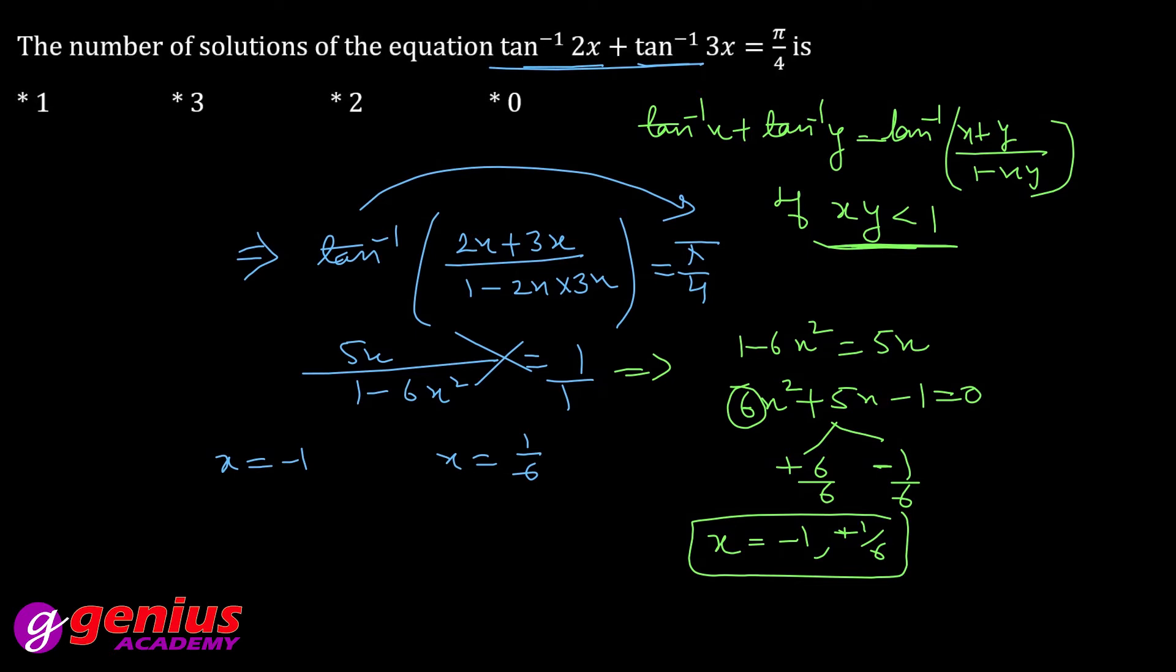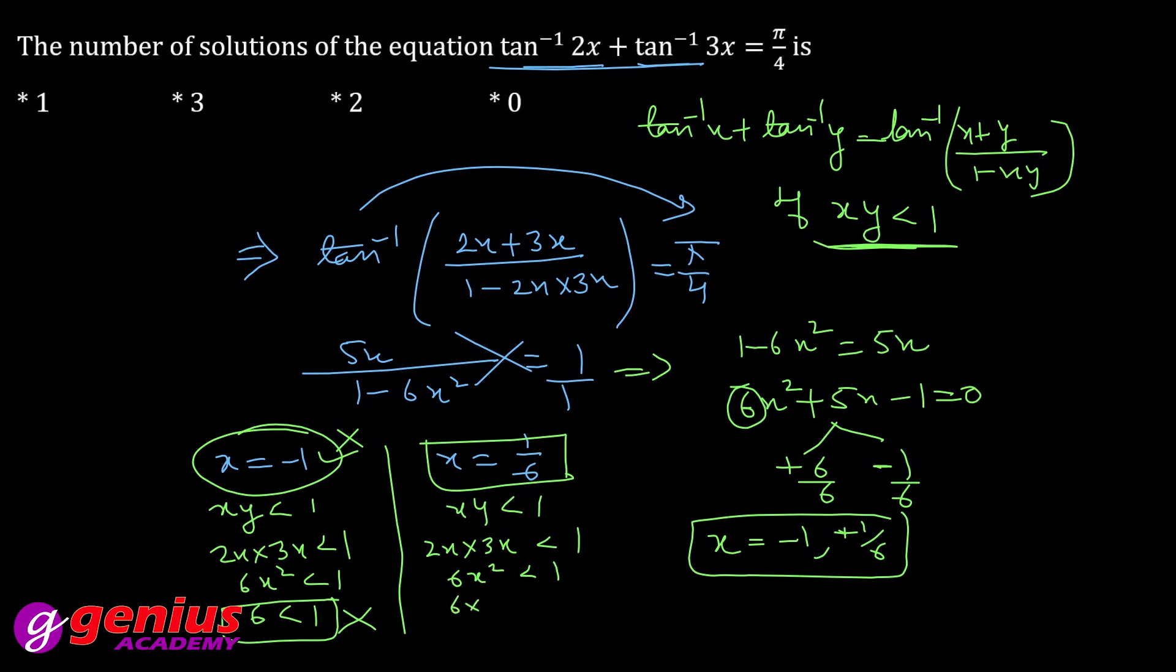We have to check the condition. x times y is less than 1. x is 2x, y is 3x, so 2x times 3x less than 1. For x equals minus 1, 6x square is 6, which is not less than 1. For x equals 1 by 6, 6x square is 1 by 6, which is less than 1. So x is equal to 1 by 6 only. Only one solution.